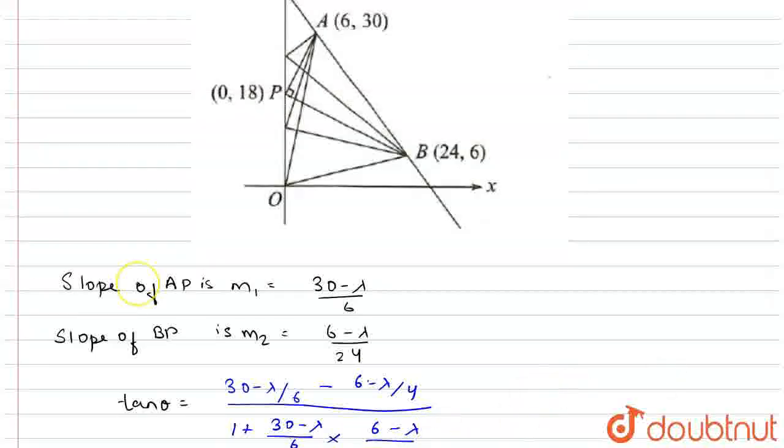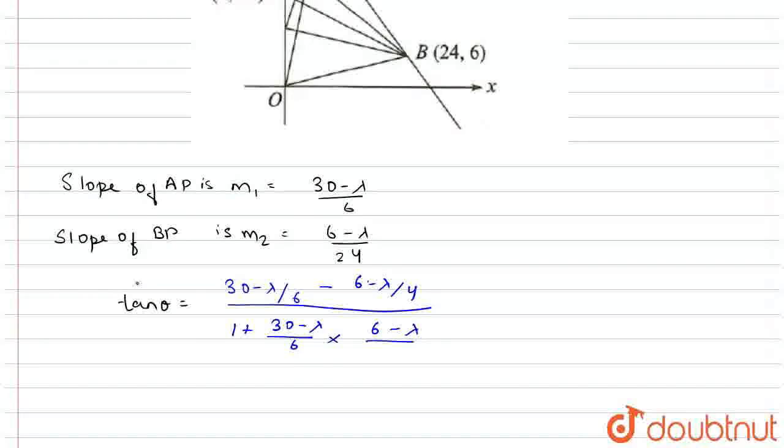This will come as 38 minus lambda divided by 324 minus 36 lambda plus lambda square. This is equal to 38 minus lambda into 18 divided by lambda minus 18 whole square.